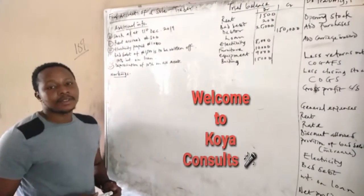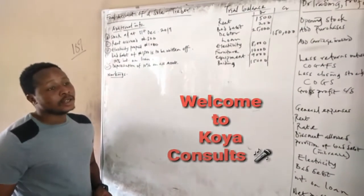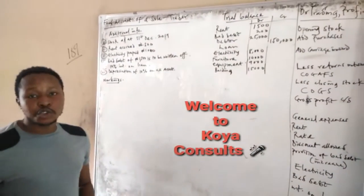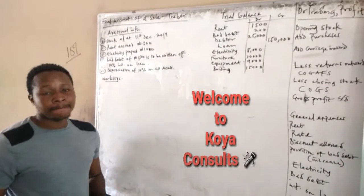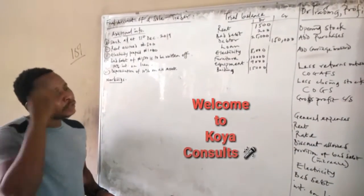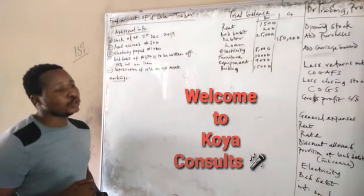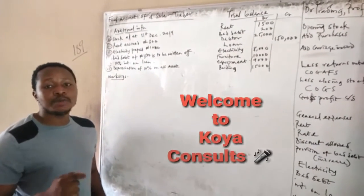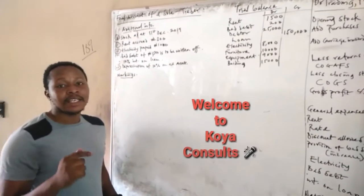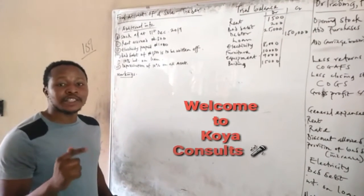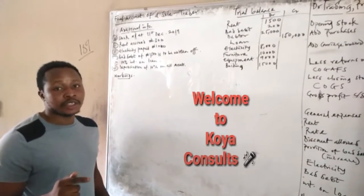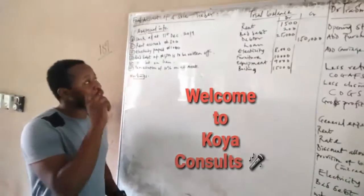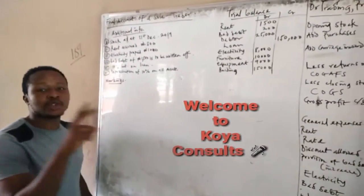Hello guys, today we're talking about final accounts of a sole trader. Before you start doing your workings, the first thing that should come to your mind is to know that you start from the additional information, and note that anything that appears in the additional information appears twice in your account.